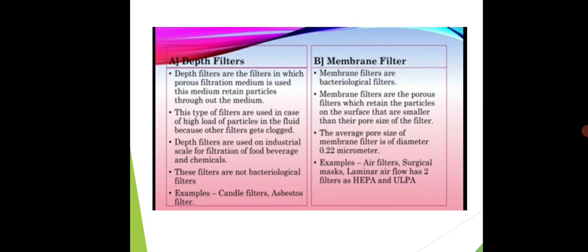Two types of filters are used: depth filters and membrane filters. Depth filters use a porous filtration medium which retains particles throughout the medium. Particles and bacteria settle on that filter. This type of filter is used in cases of high load of particles in the fluid, because other filters get clogged. Depth filters are considered dependable when there is a large microbial load in the fluid.